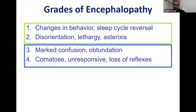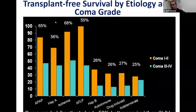We normally divide into early hepatic encephalopathy — grade one to two — or severe, which is grade three to four. When we combine etiology and coma grade, we get more prognostic information. This graph shows etiology together with coma grade. Patients with acetaminophen generally do well, and so do hepatitis A patients.